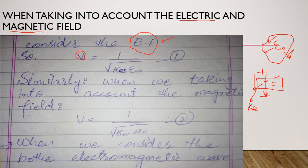صرف electric field کے case میں جب ہم دونوں کو consider کریں گے تب ہم c use کریں گے۔ آپ نے Coulomb's law میں پڑھا ہے کہ اگر دو charges کے درمیان material رکھ دیں تو force reduce ہو جاتی ہے — اس سے ثابت ہوتا ہے کہ k_e اور ε₀ کا inverse relation ہے۔ یعنی جب کوئی medium رکھیں جس کا dielectric constant اور epsilon-not value ہو تو speed of light v کم ہوگی۔